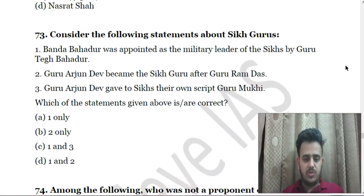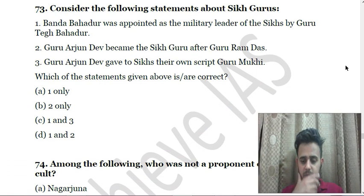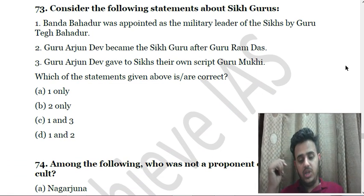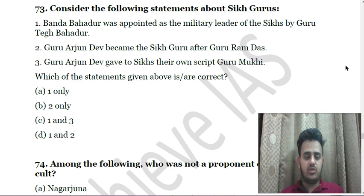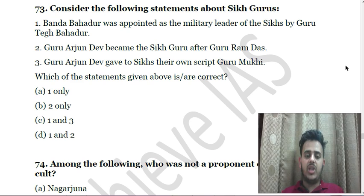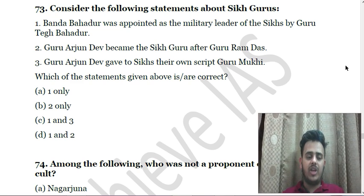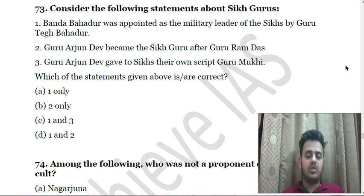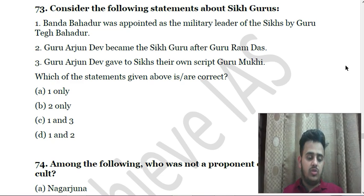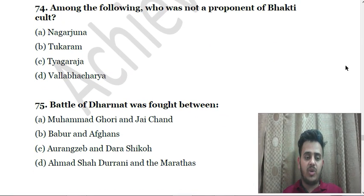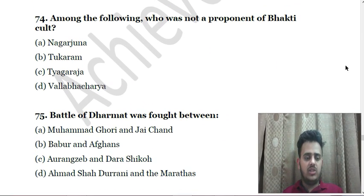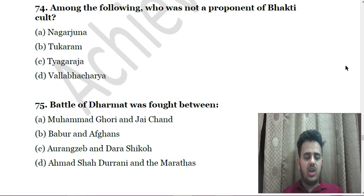Next: Consider the following about Alvars and Nayanars — First, they found the caste system valid and based on practical lines; Second, women devotees were not allowed within the sangha. Next: Who was the last ruler of the Tughlaq dynasty of the Delhi Sultanate? A. Firuz Shah Tughlaq, B. Ghiyasuddin Tughlaq Shah II, C. Nasiruddin Mahmud, D. Nasrat Shah. Next: Consider the following statements about Sikh Gurus — First, Banda Bahadur was appointed as a military leader by the Sikhs by Guru Tegh Bahadur; Second, Guru Arjan Dev became the first Sikh Guru after Guru Ram Das; Third, Guru Arjan Dev gave to Sikhs their own script, Gurmukhi.